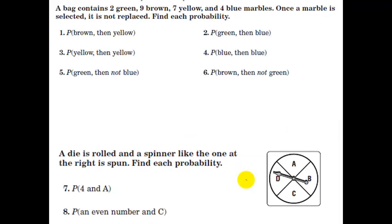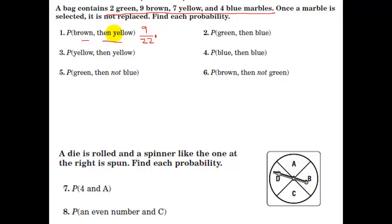Here's an example. A bag contains two green, nine brown, seven yellow, and four blue marbles. Once a marble is selected, it is not replaced. Find the probability of brown then yellow. At the beginning, the probability of brown is nine out of twenty-two total marbles. Then we multiply by the probability of yellow: if we've taken a brown out, there are still seven yellows left out of now only twenty-one marbles. Multiply those two together for the probability of brown then yellow.